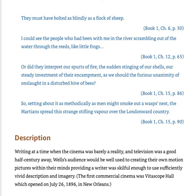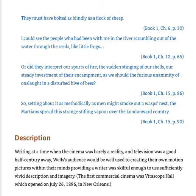Descriptive writing is very important for Wells because he's writing at a time when the cinema was barely a reality and television was a good half a century away. Wells' audience will be well used to creating their own motion pictures within their minds, providing a writer was skilful enough to use sufficiently vivid description and imagery. The first commercial cinema was Vitascope Hall, which opened on July 26, 1896, in New Orleans, America. People were getting their entertainment from reading. Anyone writing in the 1800s was usually painting very powerful pictures with language — which is why some of the great novels come from that era.